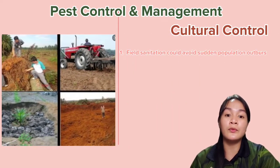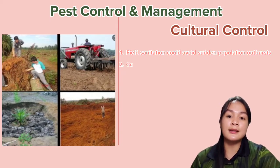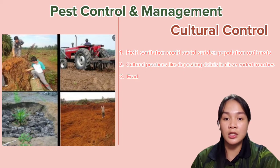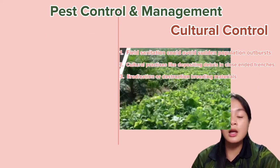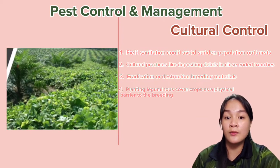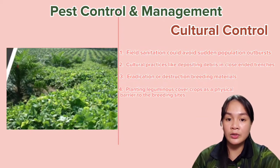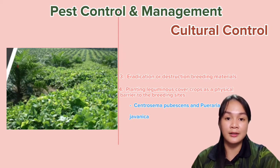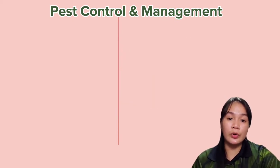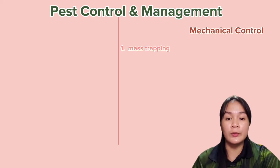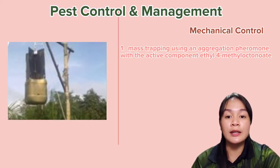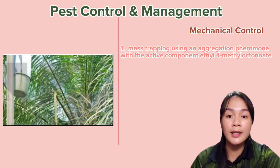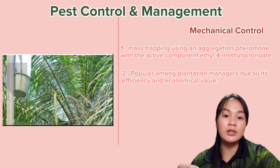The second insect pest control is through cultural practices. Proper management of field sanitation could avoid sudden population upsurges. Cultural practices include depositing debris in closed-end trenches, eradication or destruction of breeding materials, and planting leguminous cover crops as a physical barrier to breeding sites, such as Centrosema pubescens and Pueraria javanica.